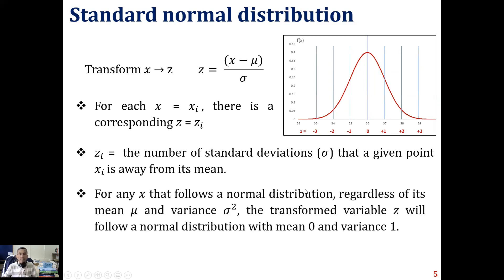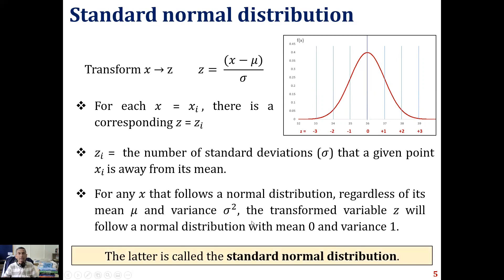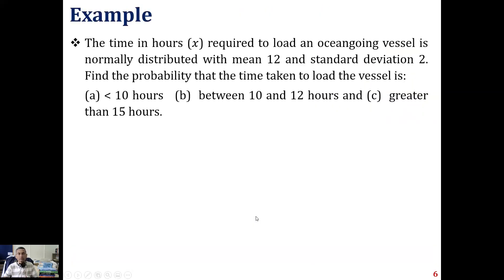For any x that follows a normal distribution, regardless of its mean and variance, the transformed variable z will also follow a normal distribution, but with a mean of 0 and variance of 1. This is called the standard normal distribution. This transformation is extremely useful as we go forward.